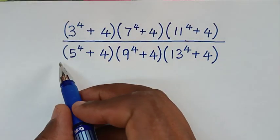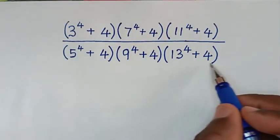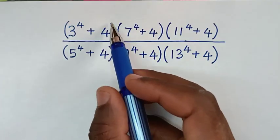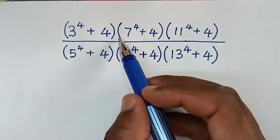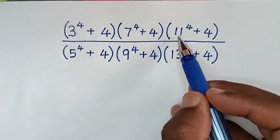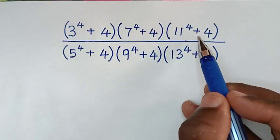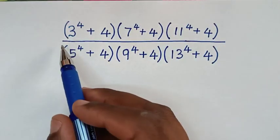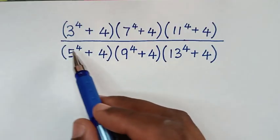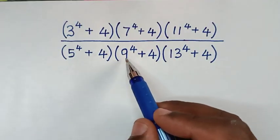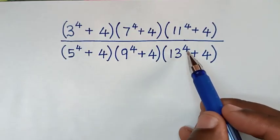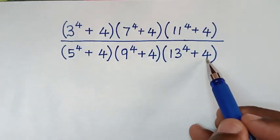Hello, you are welcome to solve this math problem, which is 3 power 4 plus 4, bracket, 7 power 4 plus 4, bracket, 11 power 4 plus 4, bracket, over 5 power 4 plus 4, bracket, 9 power 4 plus 4, bracket, 13 power 4 plus 4.